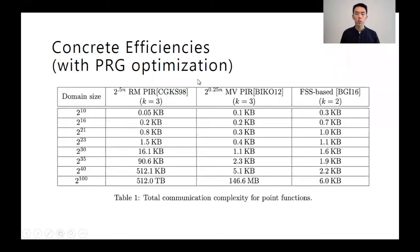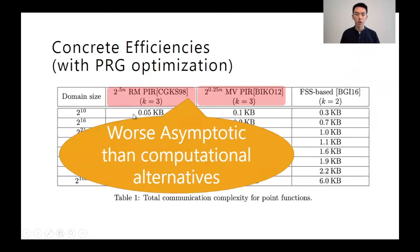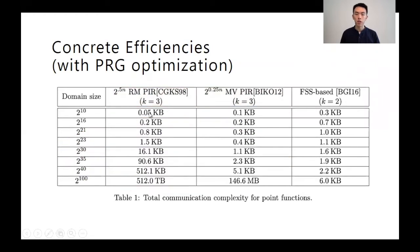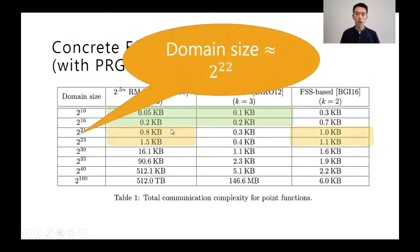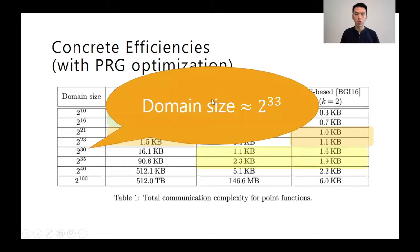The concrete communication complexity of HSS for point functions is given in the following table. The communication complexity is worse asymptotically as it is exponential. But concretely, for small domains, they are competitive with their computational counterparts such as FSS (function secret sharing), which in turn builds from one-way functions. In fact, they are competitive for record sizes up to millions and billions.